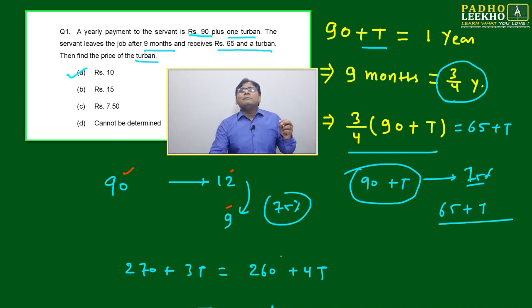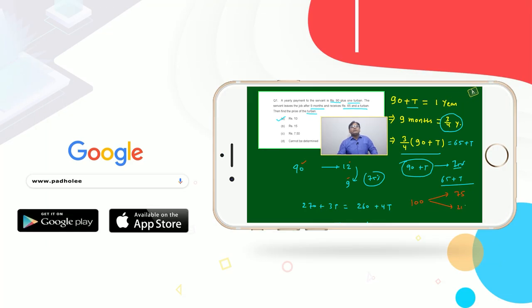Just suppose more than 90 it is 100, just suppose it is 100. Then 75 percent and 25 percent you break it - 75 rupees and 25 rupees. This 75 rupees only will be given and that is equal to 65 plus turban, means 75 equals 65 plus turban.